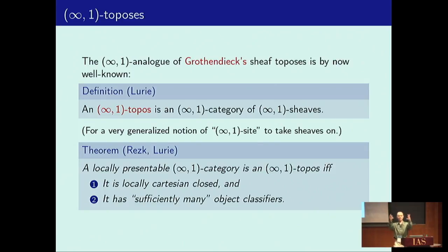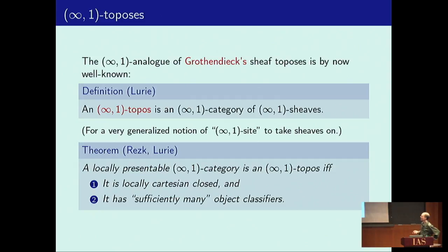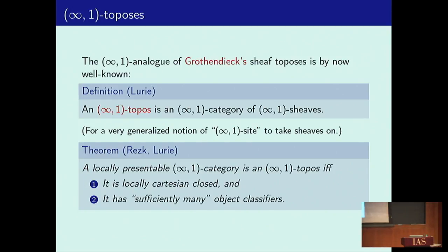Remember that we had two different kinds of one-toposes: the Grothendieck sort — toposes of sheaves — and then the more general Lawvere-Tierney elementary kind, which includes Grothendieck's but also other examples. The Grothendieck analog in the infinity-one world is pretty well known for the past ten years or so, and Jacob Lurie has probably been one of the most prolific and visible expositors and researchers in this field, although there were other people who contributed to the ideas as well.